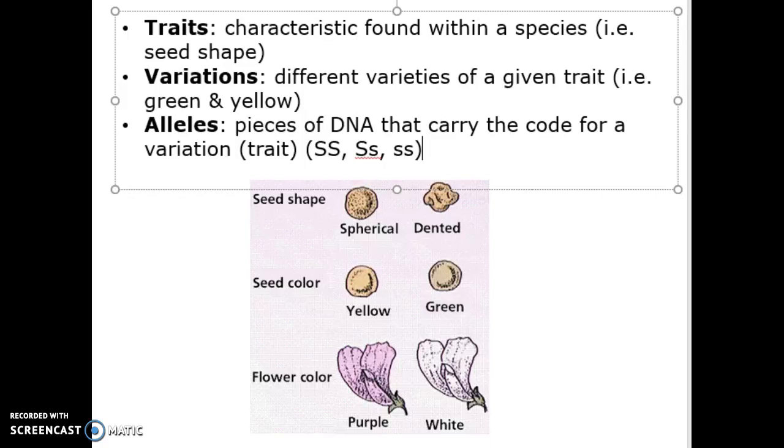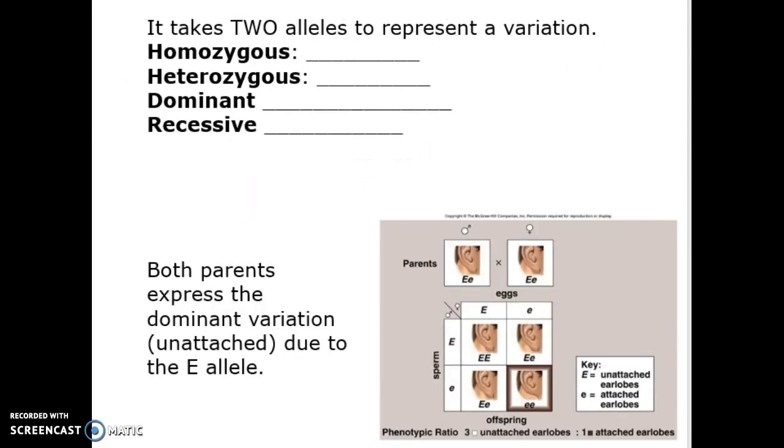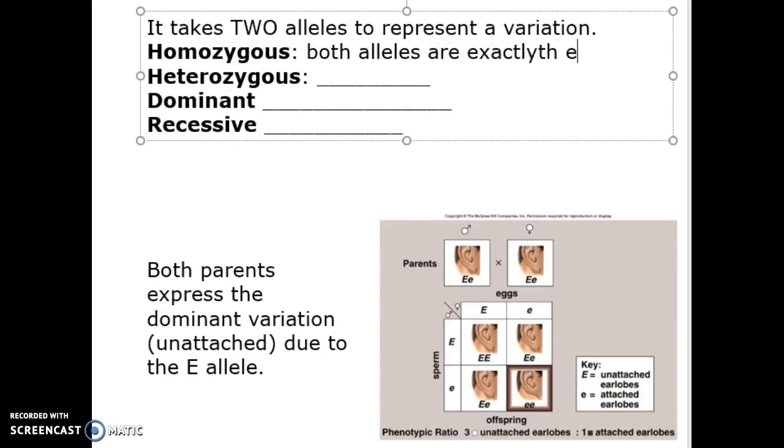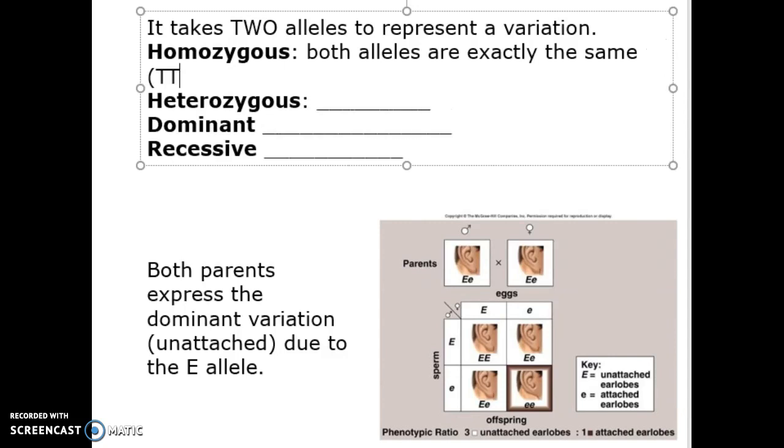As we look at traits and variations and alleles, we want to keep in mind it takes two alleles to represent a variation. Now, if you are homozygous, both alleles are going to be exactly the same. This can be represented by, and I'm just going to use T's for an example here, any letter in the alphabet works, big T, big T, or little t, little t.